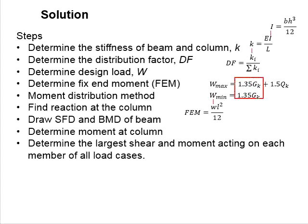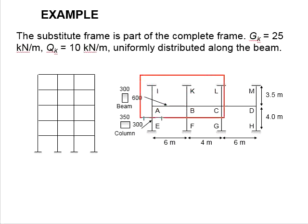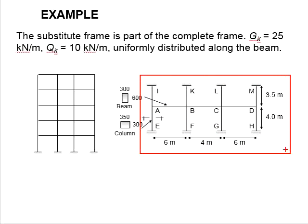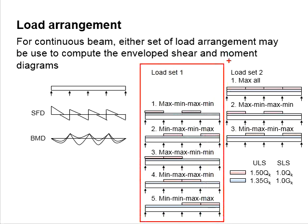The permanent actions are always there and the variable actions can be there or not. The factor of safety will always go with the respective Gk and Qk. Therefore, in the existence of variable actions, maximum load will be considered. In the absence of variable actions, minimum load will be considered. While analyzing the structures, you will have to cover different types of load cases of maximum and minimum throughout the beam spans. This can be done based on two types of load sets.